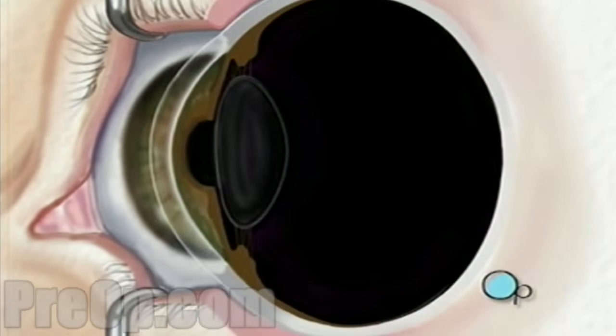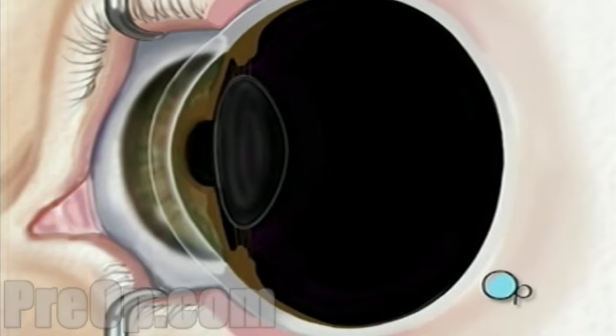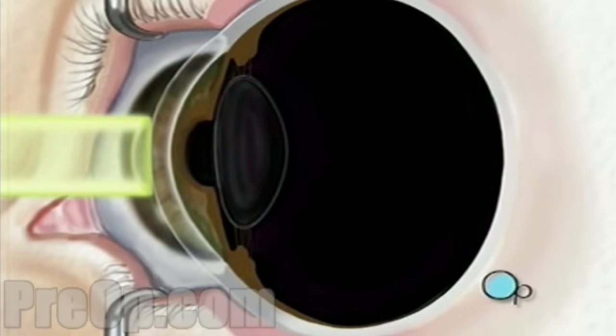Next, your doctor will use a computer to control pulses of cool laser light. These pulses will delicately remove microscopically thin layers of cells from the stroma.